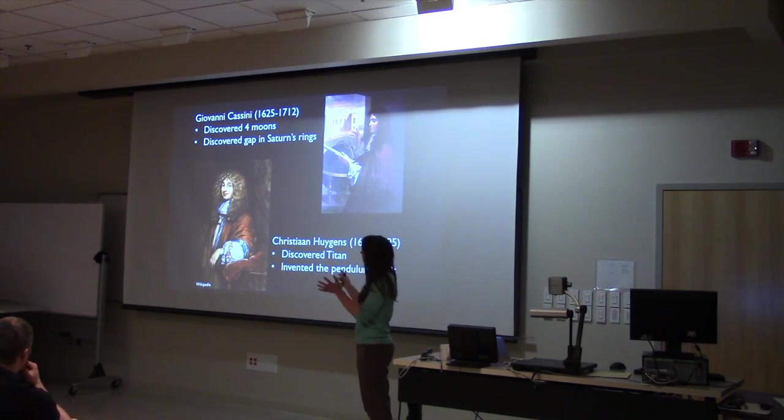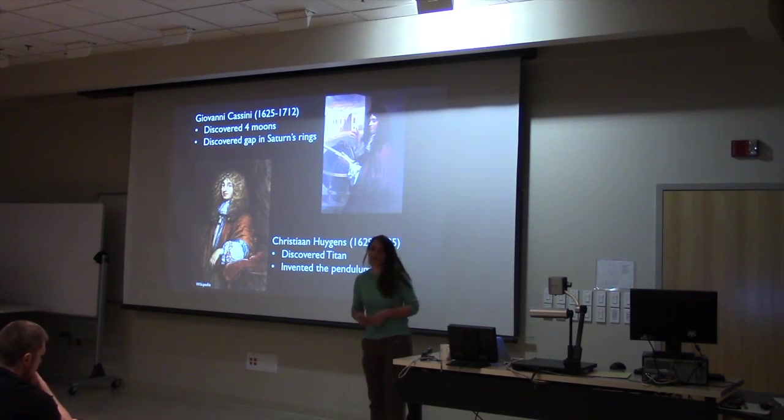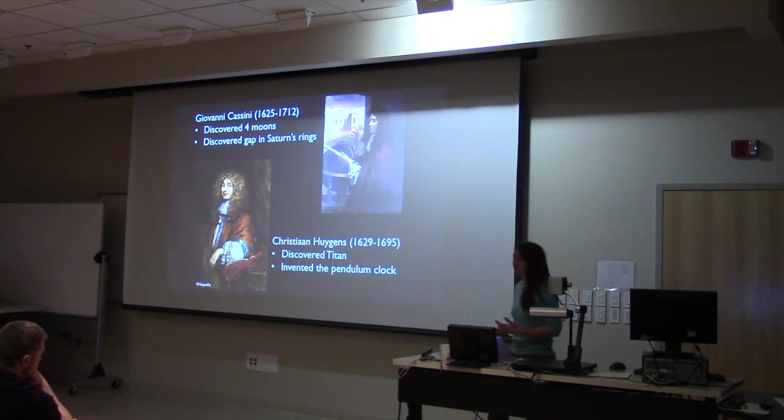Humans have known about Saturn for a long time, but the first two maybe scientists to really carefully observe and study Saturn are these two gentlemen: Giovanni Cassini, who's Italian, and Christian Huygens, who's Dutch.